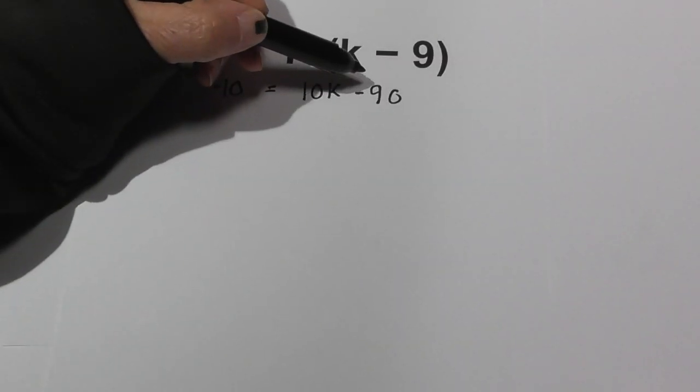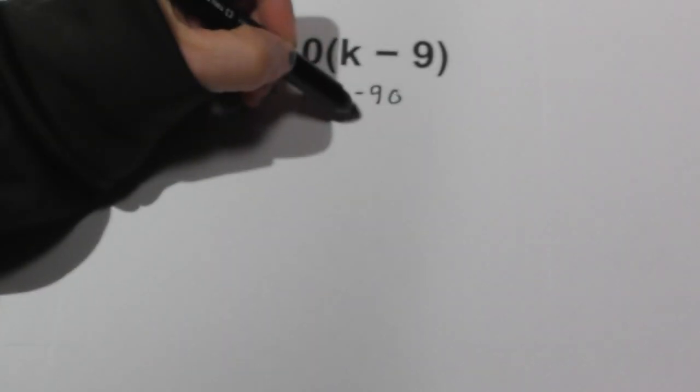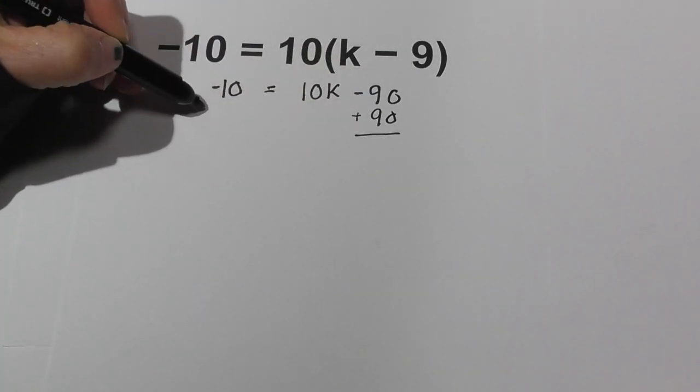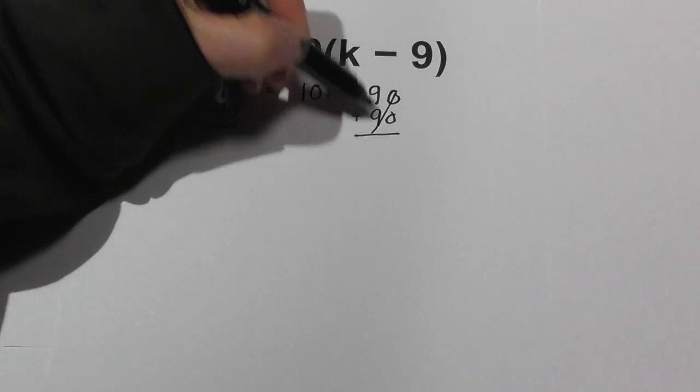Next, we can complete an opposite operation to get rid of this 90 on this side, so we're going to add 90. What you do to one side you do to the other. These cancel, and I'll bring down the 10k.